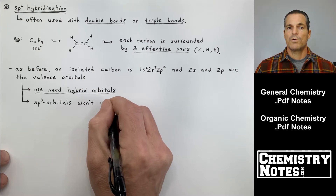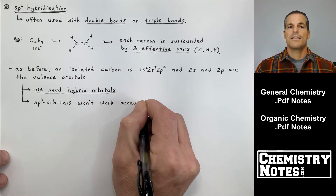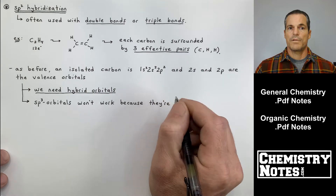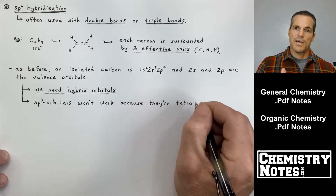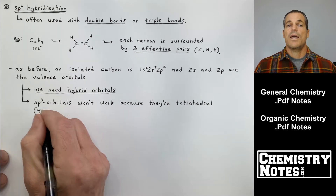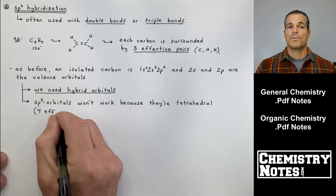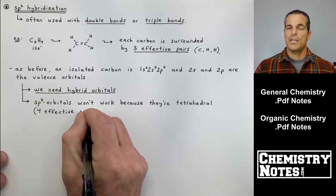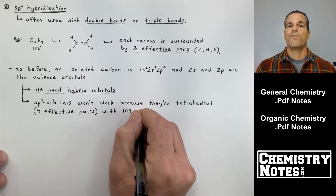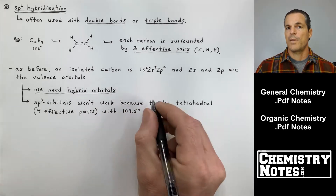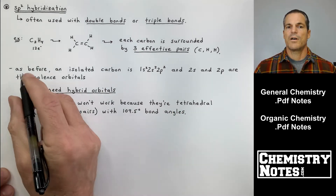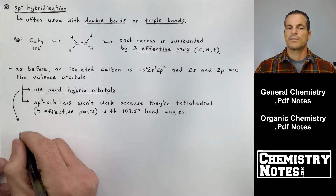We need hybrid orbitals — we have to have three identical ways of attaching carbon to each hydrogen and to the double bond carbon. sp3 orbitals won't work because they're tetrahedral. As we learned in the last video, sp3 orbitals are used when we have four effective pairs with 109.5° bond angles.